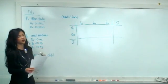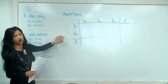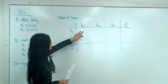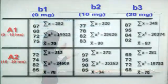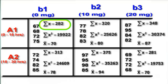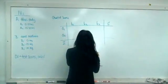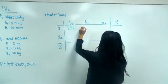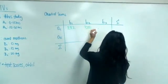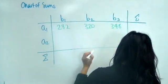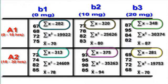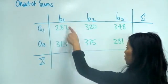We're going to start working on the sums of squares. The first thing you want to do is create a chart of sums, because we're working with sums. For A1B1, you add up the four numbers in that group. These are just the column statistics from step one — just the sum of x. We're not doing anything new; we're just reorganizing the data.